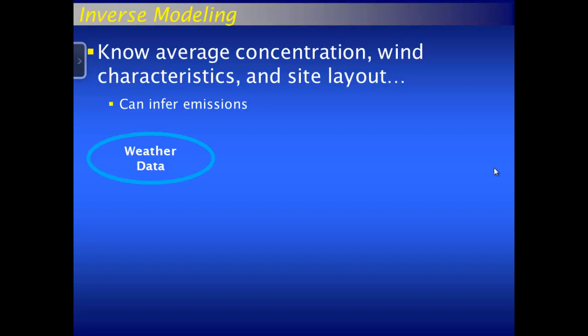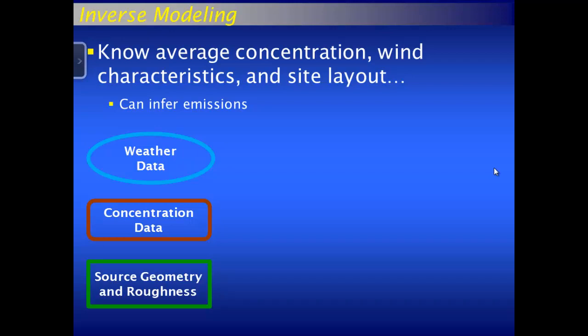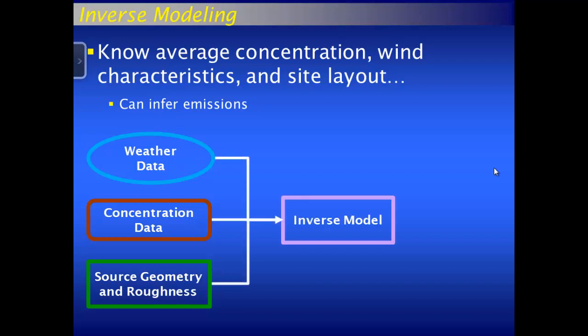We have our data sets: weather data — typically wind speed, wind direction, and some turbulent and stability parameters — and the concentration data from the radiellos, which is just one number for a two-week period while the weather data is a time series. We also know the geometry and roughness of our source area, the feedlot. If you take all three data sets and put them into an inverse model, you can back out emissions. We've gotten really good emissions estimates based on just one concentration data point every few weeks.